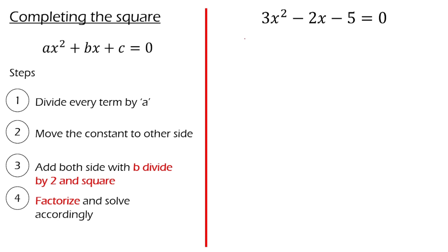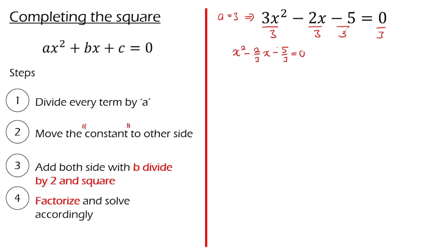Let's start with the first step: divide every term by A. If you look at this equation, our A is equal to 3. Therefore, we divide every term by 3, giving us x² − (2/3)x − 5/3 = 0. Now we do the second step, which is move the constant to the other side. Our constant is negative 5/3, so we move it and get x² − (2/3)x = 5/3.